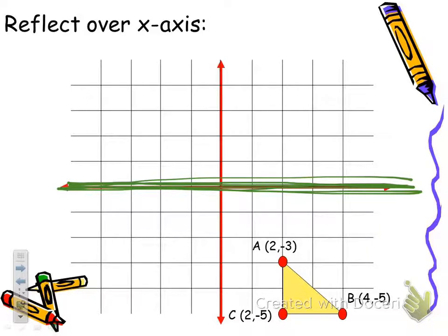For point A, which is at (2, -3), I count 3 units to the mirror: 1, 2, 3. That means from the mirror on the other side, I count 3 units: 1, 2, 3. And that is where A prime goes. Notice how it's the same exact distance from the mirror as the original shape was.